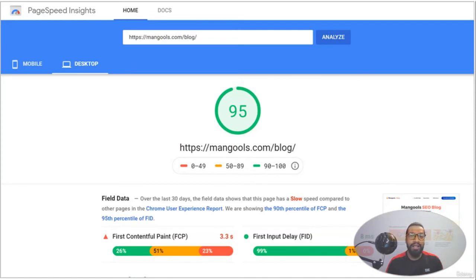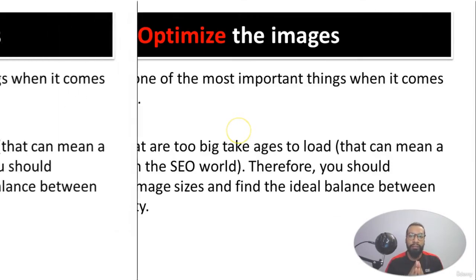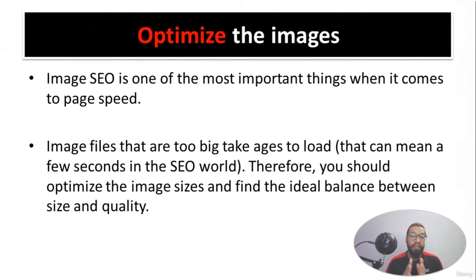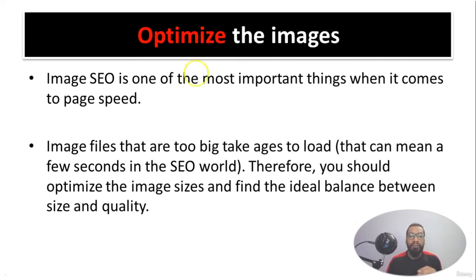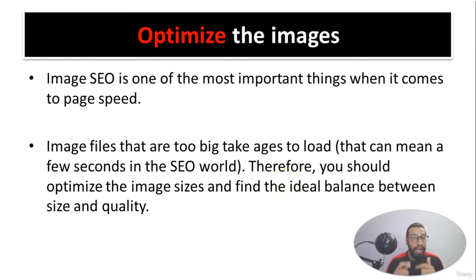There are other tools available as well that you can use to test page speed. Another on-page factor is image optimization. Image SEO is one of the most important things when it comes to page speed, because image files that are too big can take ages to load — that can mean a few extra seconds in the SEO world.